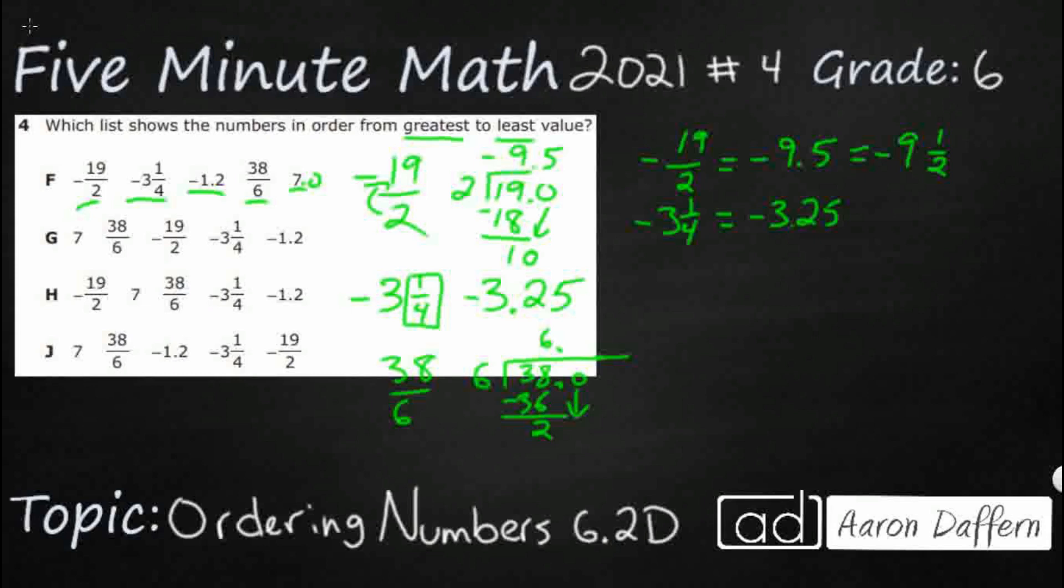6.3 repeating is the same as 1 third. That is a benchmark fraction. So, now we have everything right here in decimals.